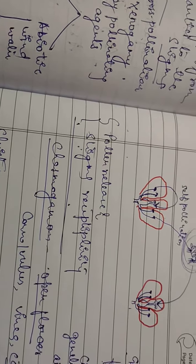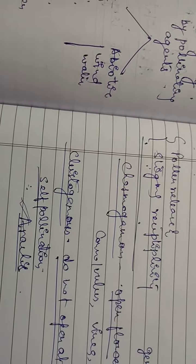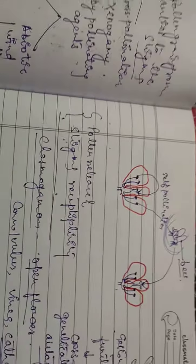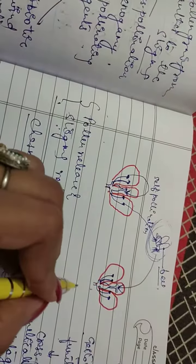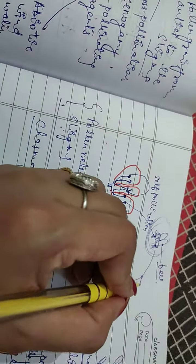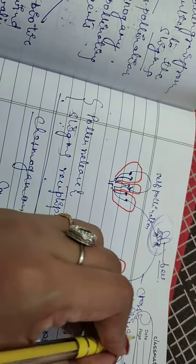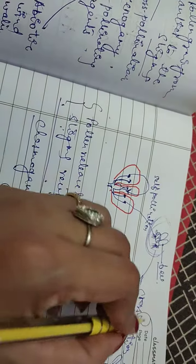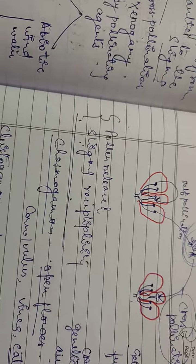Now, what differentiates xenogamy? Xenogamy, or cross-pollination, produces a lot of variation, and that is a very important point because pollination occurs in genetically dissimilar flowers.